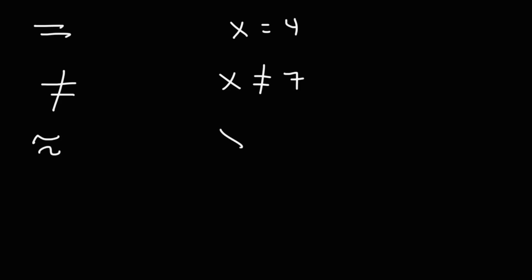Next, you have the approximate symbol. x may be approximately 3.46. It could be 3.461289, and it could keep on going. When you're rounding, it's good to use the approximation symbol.